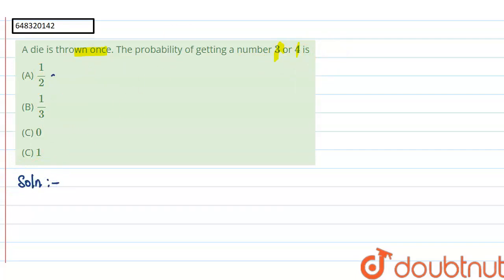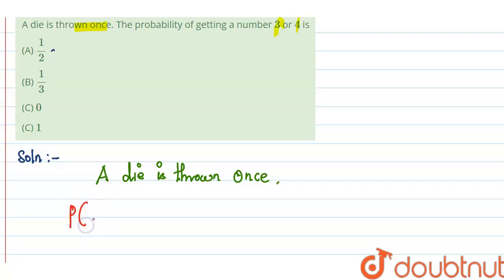Going to solve this. A die. The given data is: a die is thrown once. Probability of getting 3 or 4 is—you have to find this one.